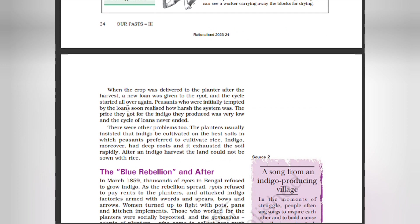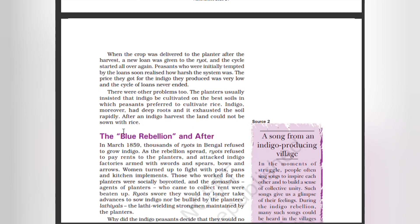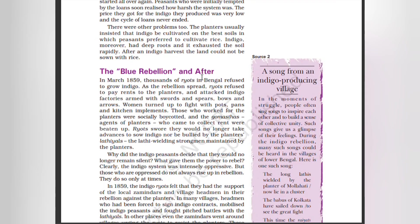When the crop was delivered to the planter after the harvest, a new loan was given to the ryot and the cycle started all over again. Peasants who were initially tempted by the loans soon realized how harsh the system was. The price they got for the indigo they produced was very low and the cycle of loans never ended. The planters usually insisted that indigo must be cultivated on the best soils, in which peasants preferred to cultivate rice. Moreover, indigo had deep roots and exhausted the soil rapidly — after the indigo harvest, the land could not be sown with rice.